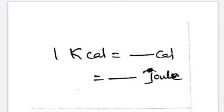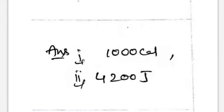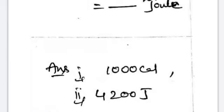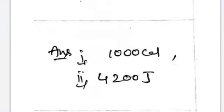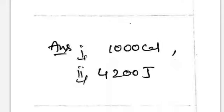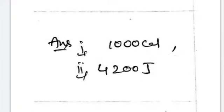One kilocalorie is equal to 1000 calories. And 1 kcal is equal to 4200 Joules. That is because 1 calorie is equal to 4.2 Joules, so 1 kcal is equal to 4200 Joules.